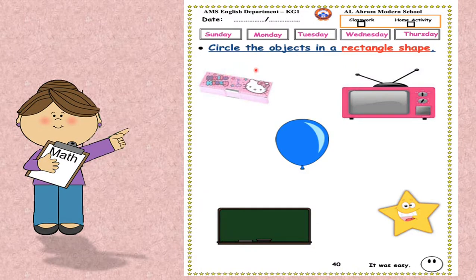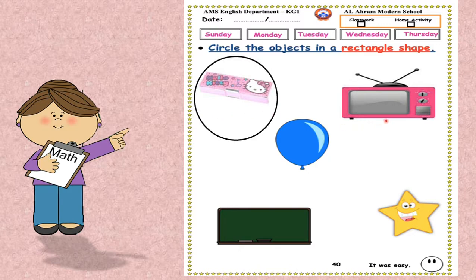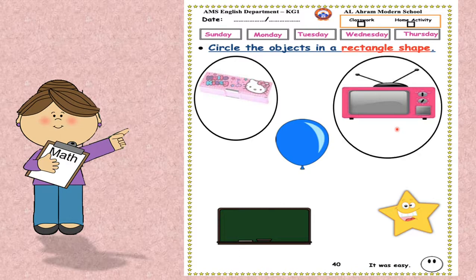Circle the objects in a rectangle shape. Look at this pencil case. Is it a rectangle shape? Yes. Circle around it. Look at this balloon. Is it a rectangle shape? No, so leave it. Look at this balloon. Is it a rectangle shape? No, so leave it.